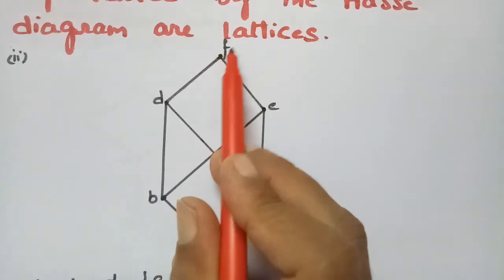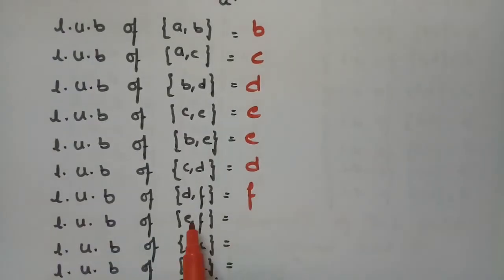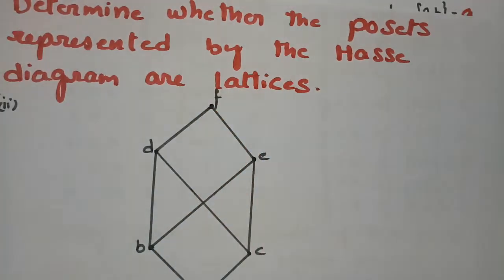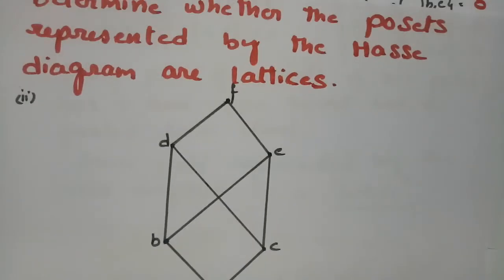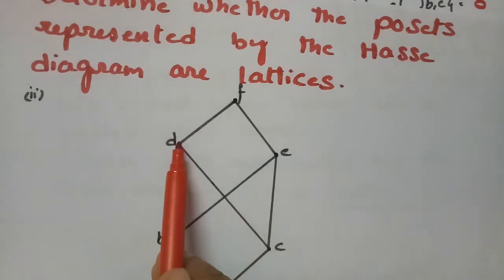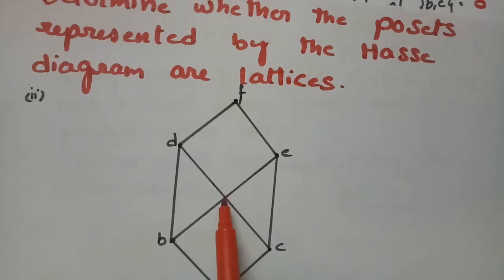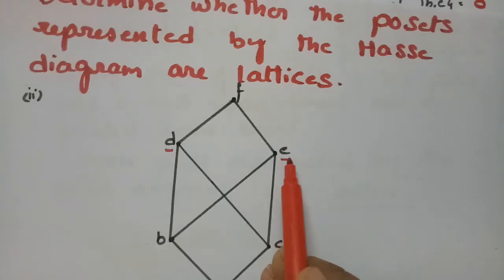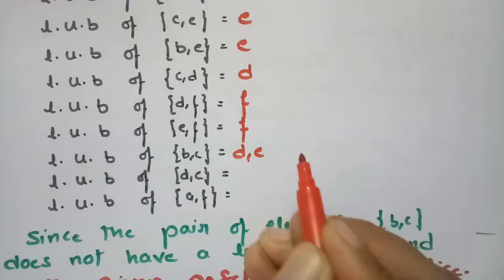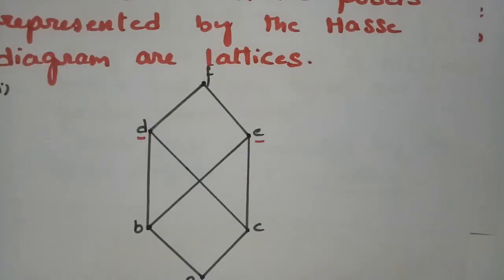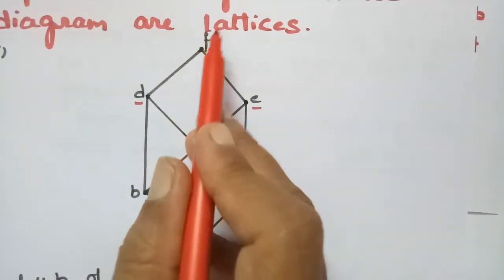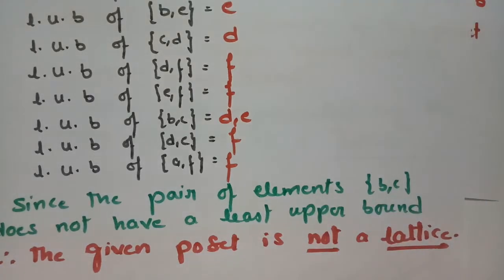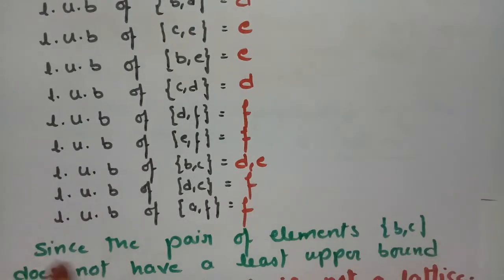For (d, f) the upper bound is f; for (e, f) the upper bound is f. Now coming to (b, c): for b and c there is no single point above both, so we go straight to d and e — we have two upper bounds, d and e.